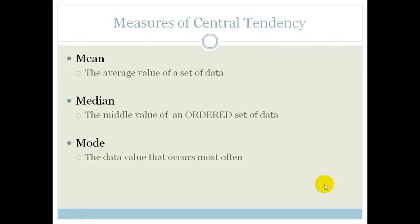First of all, your measures of central tendency. The first one is mean. Mean is the average value of a set of data. So you just add them all up and divide by the number of terms.